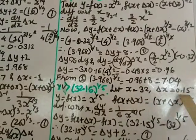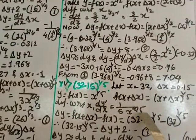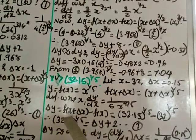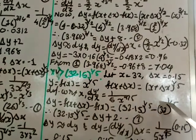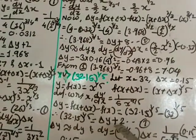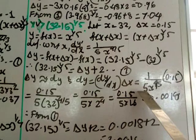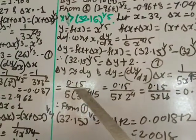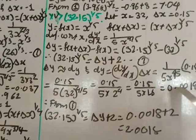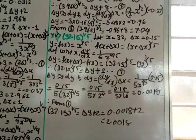Question 15: 32.15^(1/5). Take x = 32 and δx = 0.15. Define y = x^(1/5); dy/dx = (1/5)x^(-4/5). Using δy formula: δy + 2 = 32.15^(1/5) (equation 1), since 32^(1/5) = 2. Then δy = (1/(5×32^(4/5))) × 0.15. Since 32 = 2^5, 32^(4/5) = 2^4 = 16, so δy = 0.15/80 ≈ 0.0018. Substituting: 32.15^(1/5) ≈ 0.0018 + 2 = 2.008.